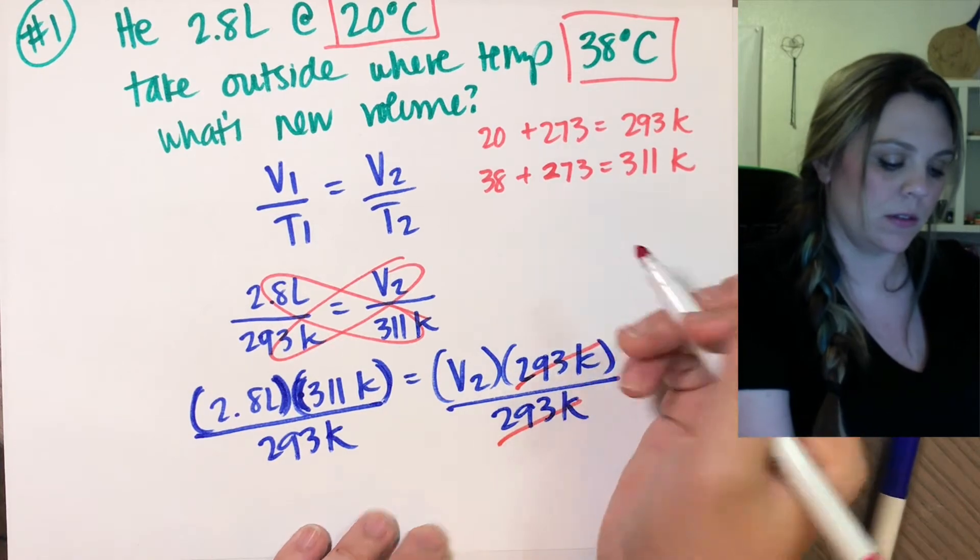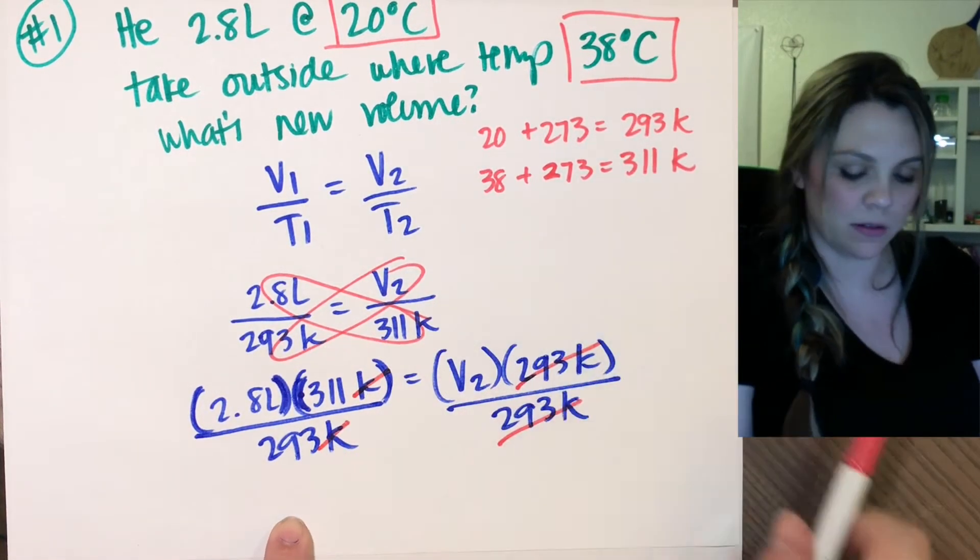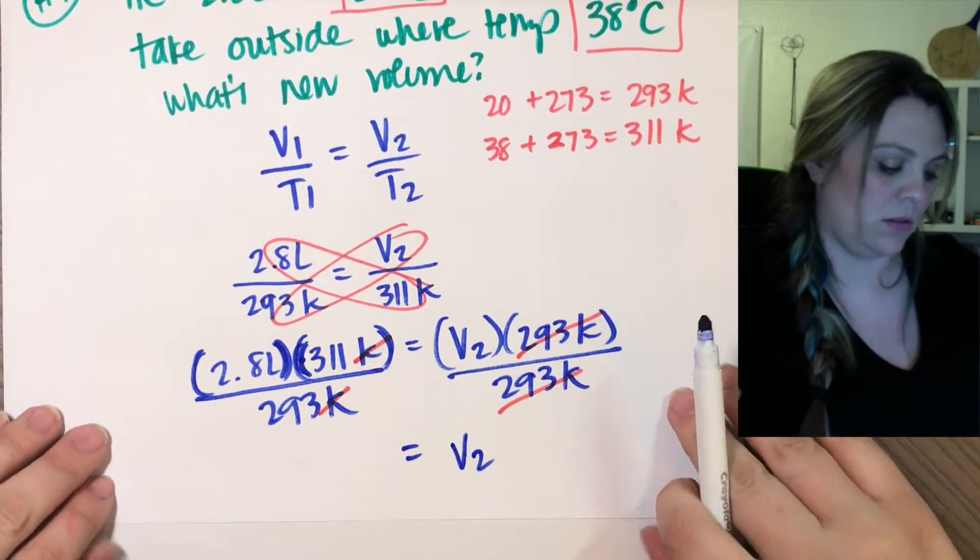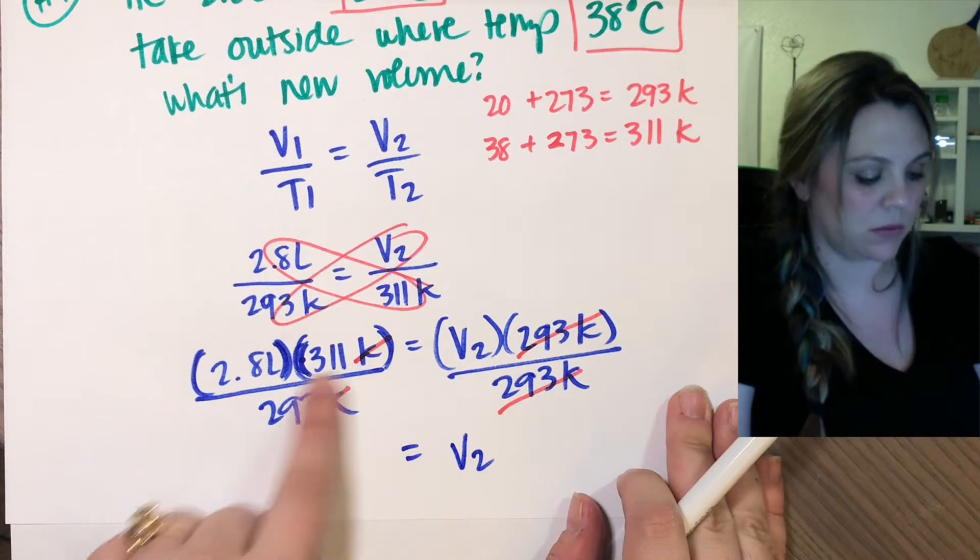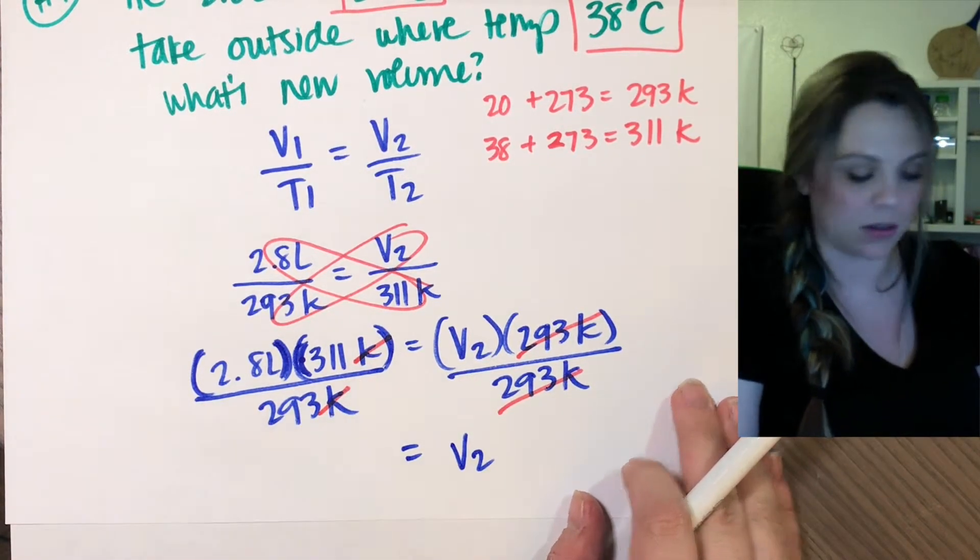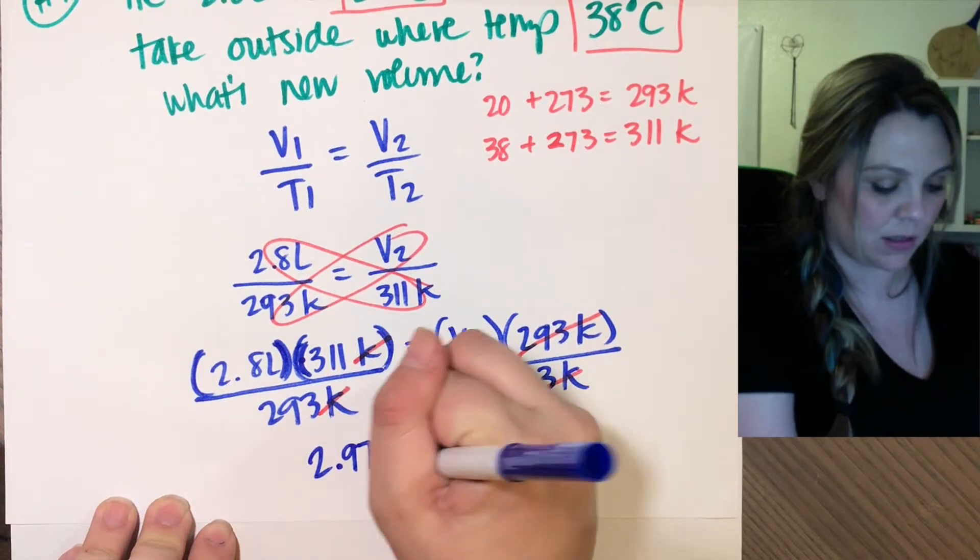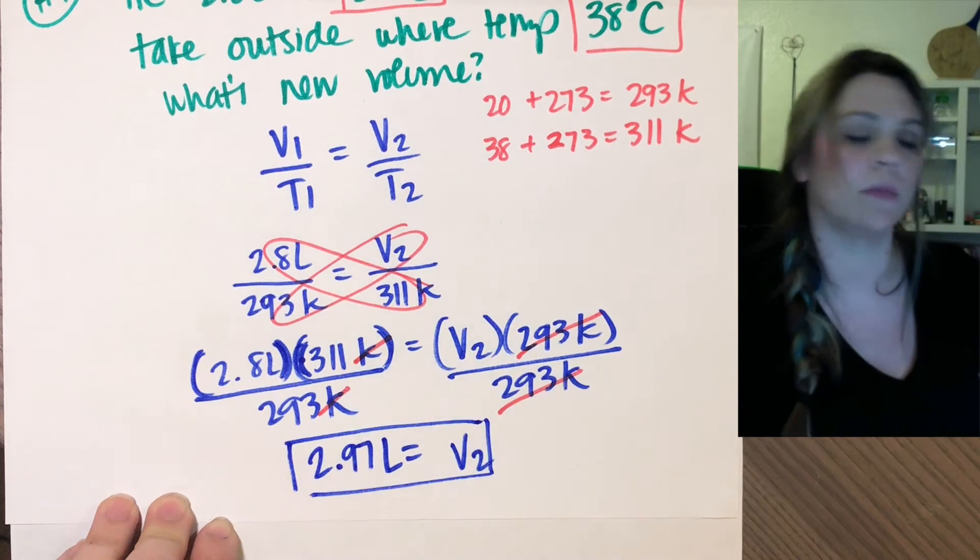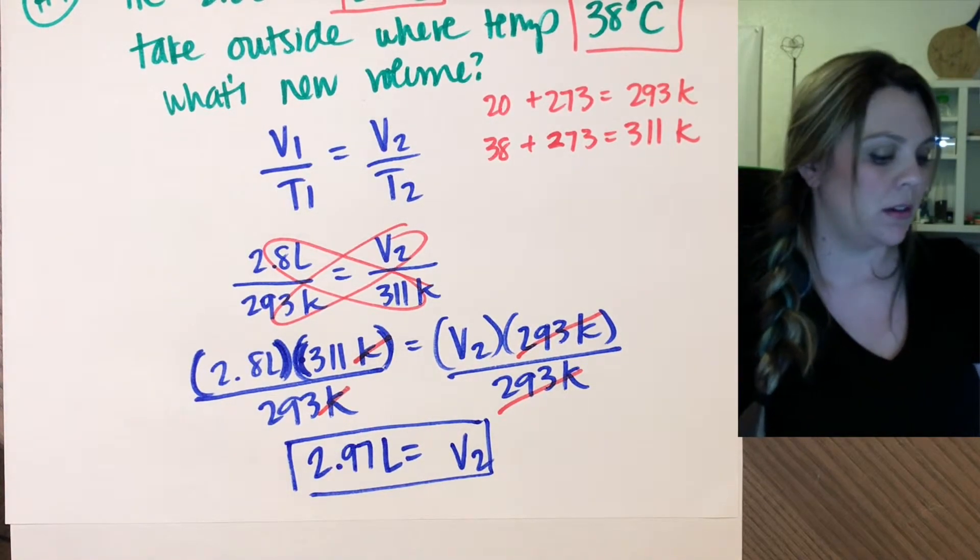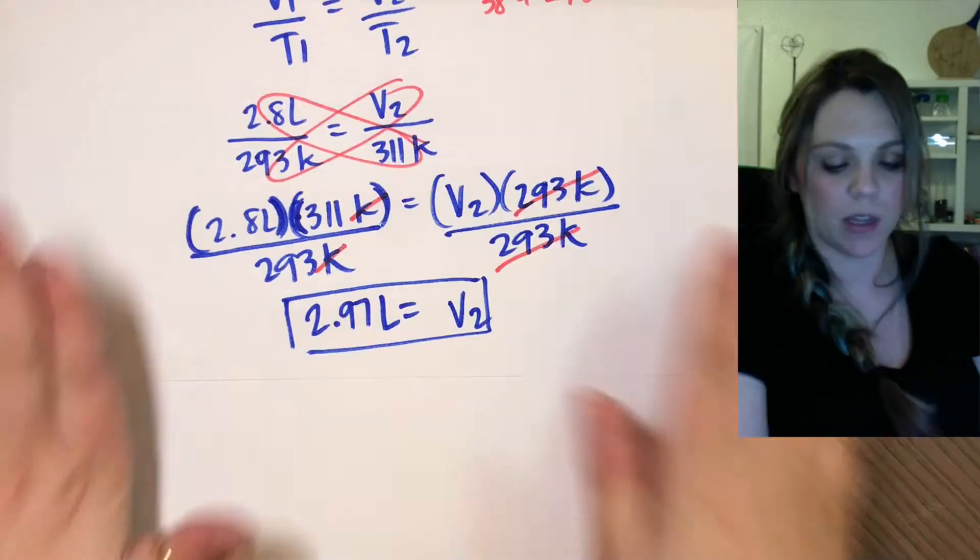Multiply those two together and divide by 293 kelvin. These cancel so I'm solving for V2, kelvin and kelvin cancel, and I get that my volume two is equal to just plug in 2.8 times 311 divided by 293 in your calculator - you get 2.97 liters. So your volume is actually increased which makes sense because the temperature increased.